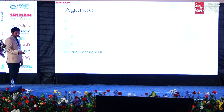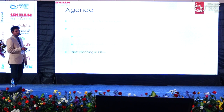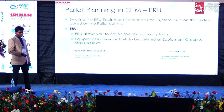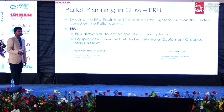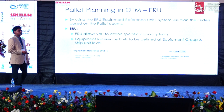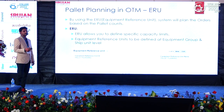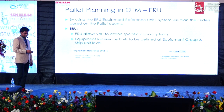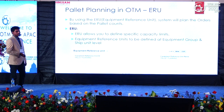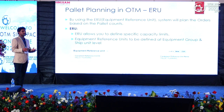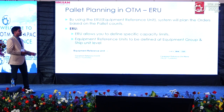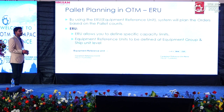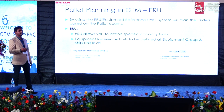Having completed the consolidation part, we now use it to plan orders based on pallet counts. To plan based on pallet counts, we use the ERU option. ERU allows you to define specific capacity limits at the equipment group level. This configuration must be set at both the equipment group level and the order release ship unit level. Then the system will calculate the number of pallets and pick the right equipment group.